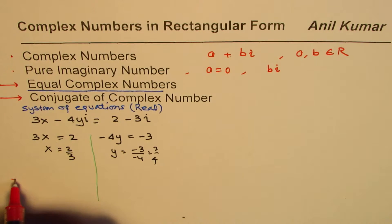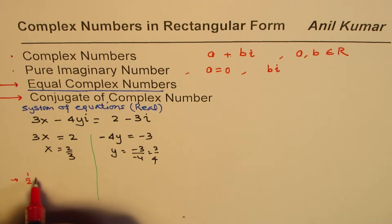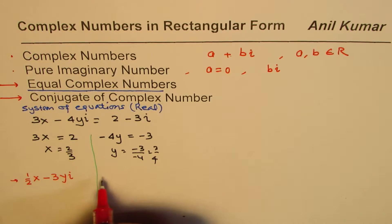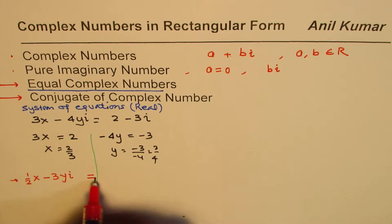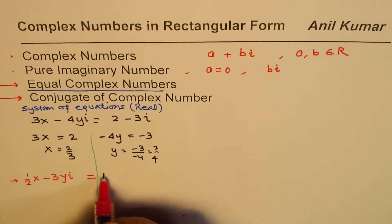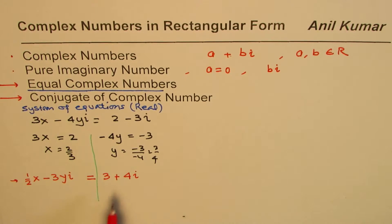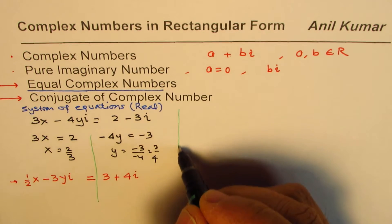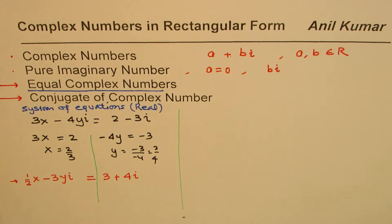Here is a practice question for you. Let us say we have half x minus 3yi equals 3 plus 4i. Find the value of x and y so that this equation is equal. So that is the first part: to understand how to find the value of the variables when two equations are equal.